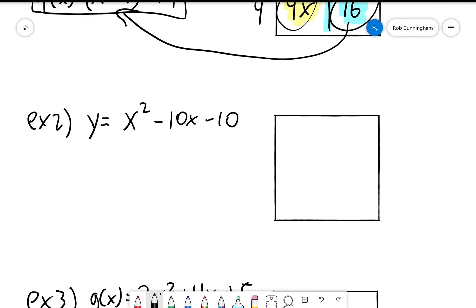Y equals x squared minus 10x minus 10. Okay, so I'm going to divide my square up into four regions, same as before. Same as before, the upper left is x squared, making this side x and this side x. I need to distribute this negative 10x equally into these two regions. So that gives me negative 5x and negative 5x.